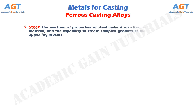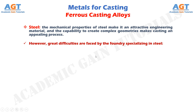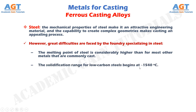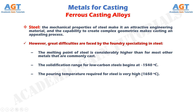Steel. The mechanical properties of steel make it an attractive engineering material, and the capability to create complex geometries makes casting an appealing process. However, great difficulties are faced by the foundry specializing in steel. The melting point of steel is considerably higher than for most other metals that are commonly cast. The solidification range for low carbon steels begins at 1540 degrees Celsius, and the pouring temperature required for steel is very high — about 1650 degrees Celsius.